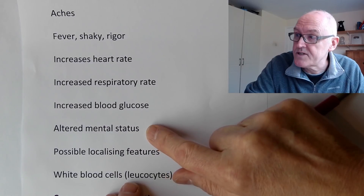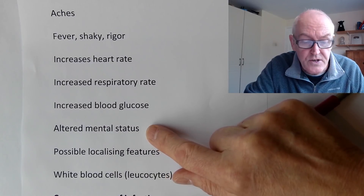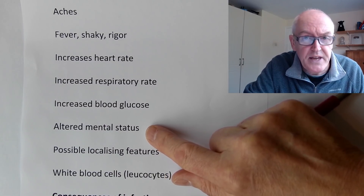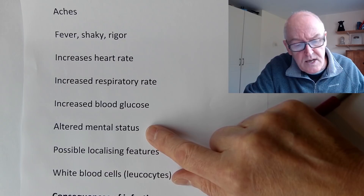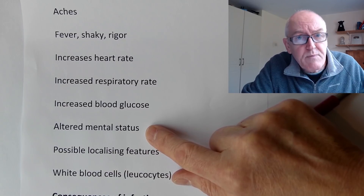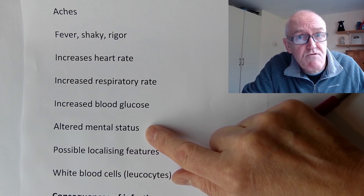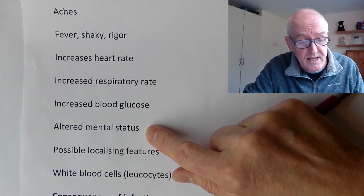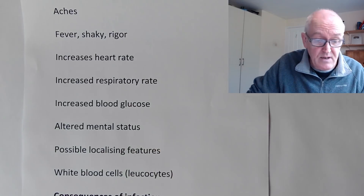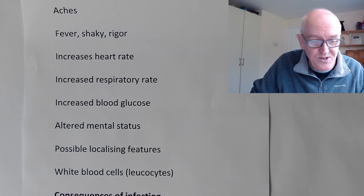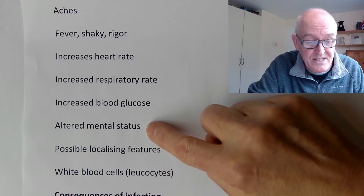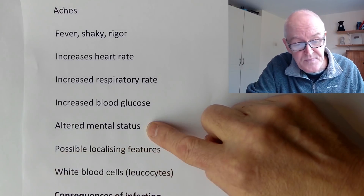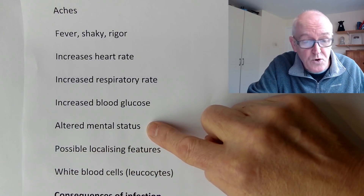Altered mental status is another sign - you might not be thinking as well as you normally do. Older people especially can get a condition called delirium where they become confused. When I get ill, I just tend to become bad-tempered. So you get alterations in your mental status, and again, that's a normal part of a systemic infection.